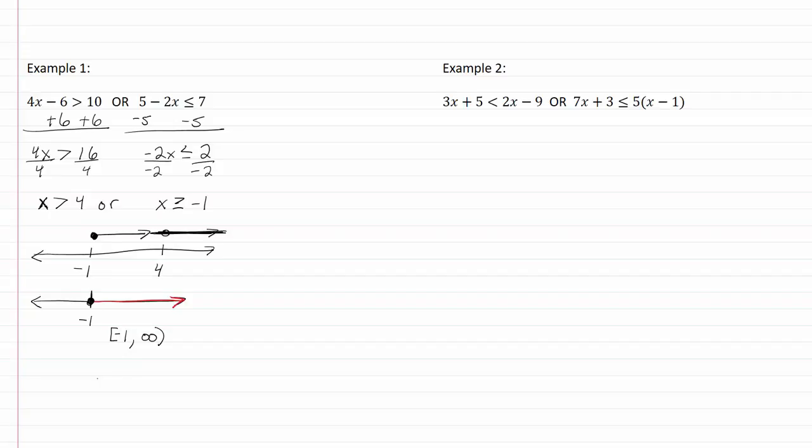Let's take a look at example two. Again we'll start by solving. I'm going to get my x's on one side first. That leaves me x plus five is less than negative nine. Subtract five from both sides and I get that x is less than negative fourteen.